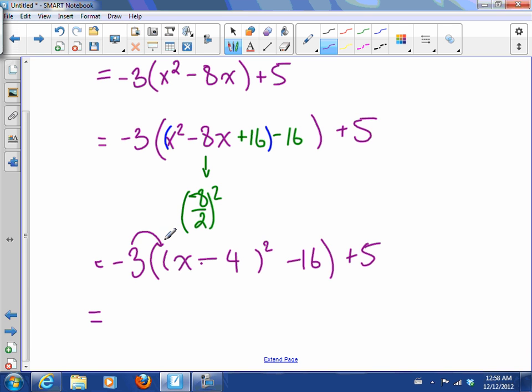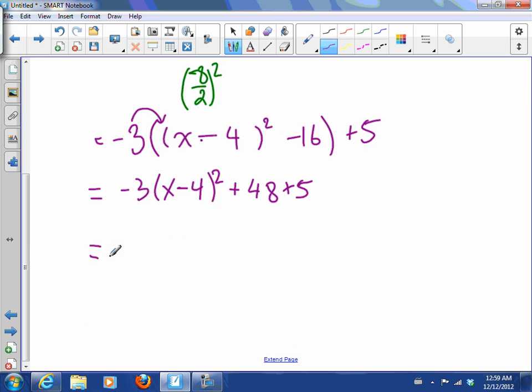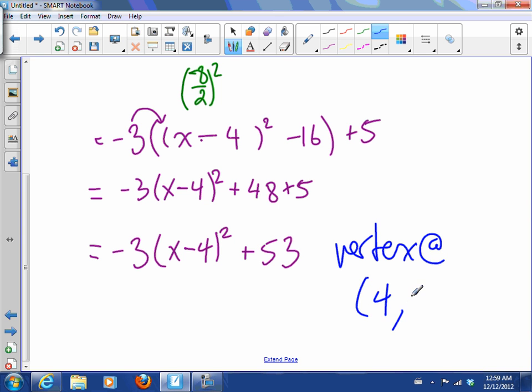So now the next part, remember I have to kick that 16 out of the bracket. So I'll expand: -3(x - 4)², -3 times -16 is +48, and then I have my +5. So this is -3(x - 4)² + 53.